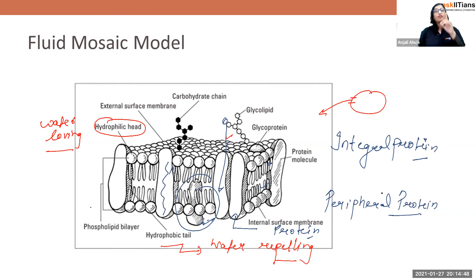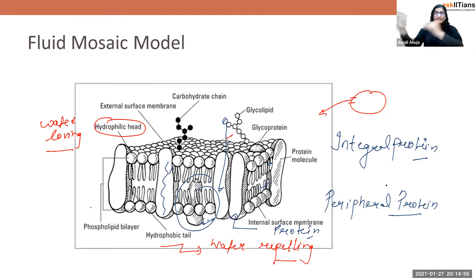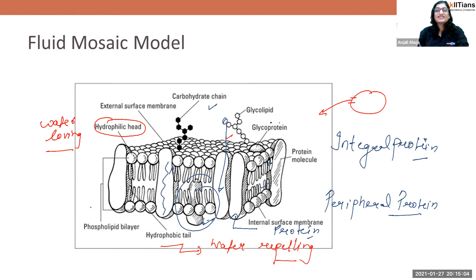In this magnified diagram of the cell membrane, lipid molecules are present in a bilayer, and proteins are present. Additionally, carbohydrates are also attached. If protein is attached to carbohydrate, we call it glycoprotein. If lipid is attached to carbohydrate, we call it glycolipid. The carbohydrate chain is also attached — and that is the cell membrane.